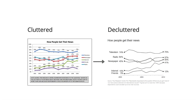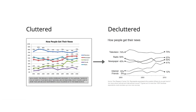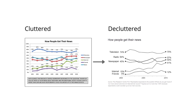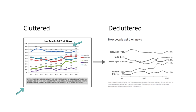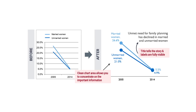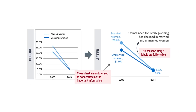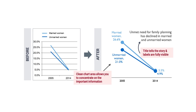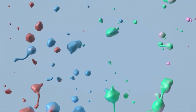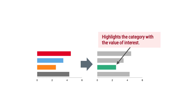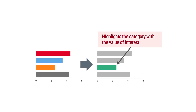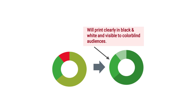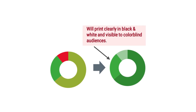Now let's quickly cover how to communicate clearly with charts. The first thing to consider when visualizing data is to declutter your chart — this means removing default lines, borders, and tick marks that distract your audience. Then you have to create purposeful titles and labels, which makes it clear to understand the key takeaways of your charts. Also make sure to use color to add impact and accessibility — highlight the category with the value of interest, and consider black and white printing and colorblind audiences.